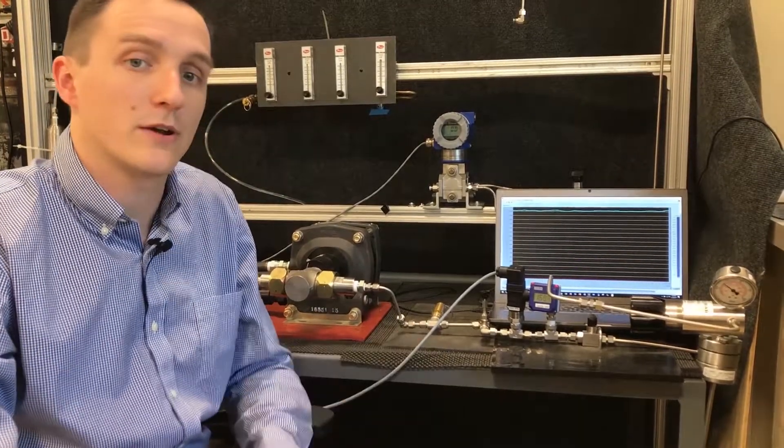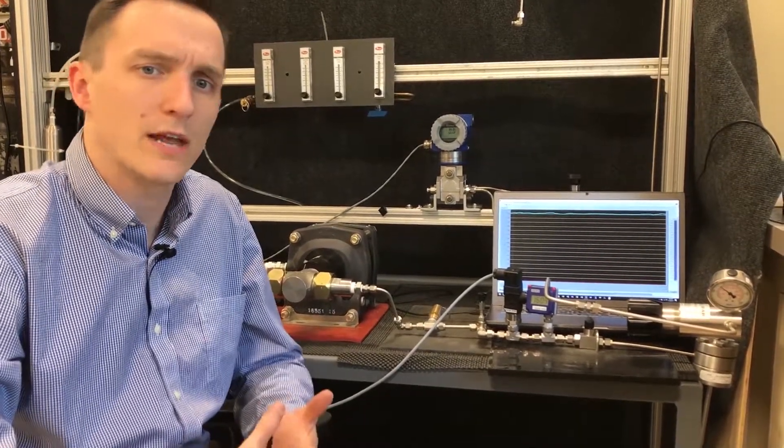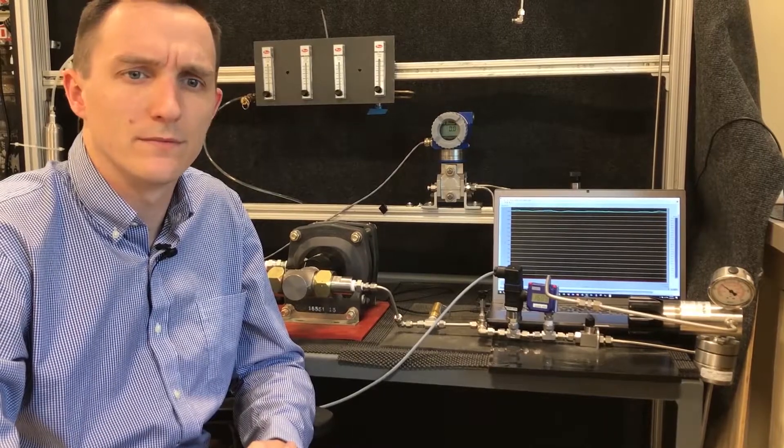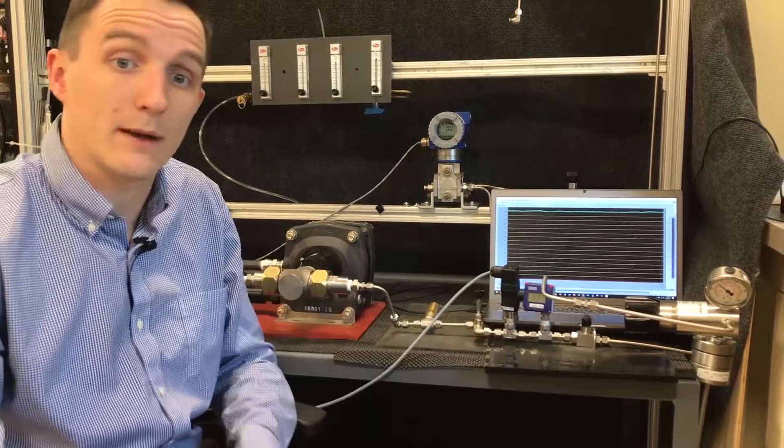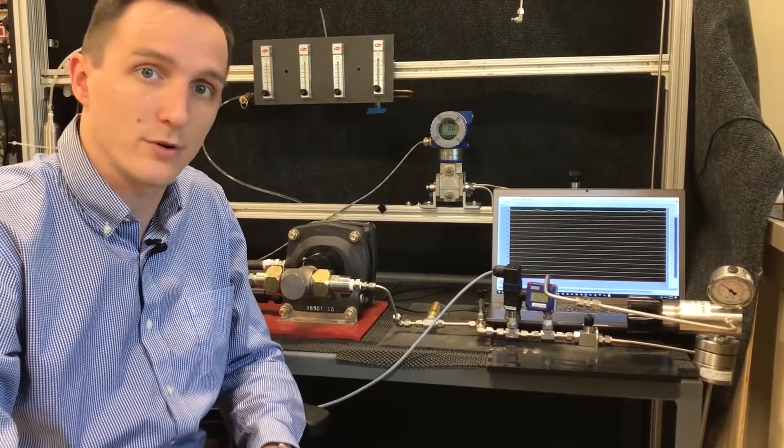Today, we will be demonstrating this process with CO2, which can be a difficult process fluid to control. This system will use an intensifying pump, metering valve, and an Equilibar back pressure regulator to control process pressure.